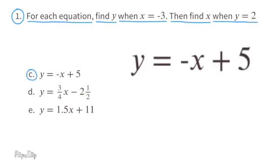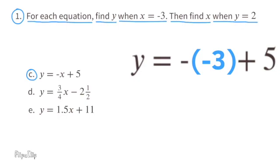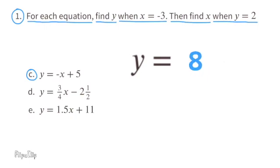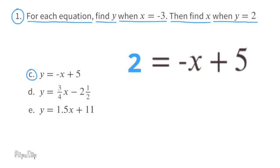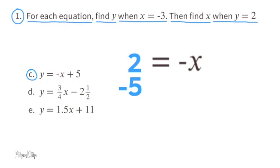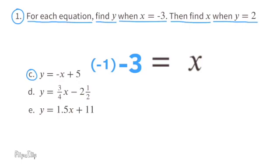Part c: y equals negative x plus 5. Substitute x with negative 3. The opposite of negative 3 is positive 3. 3 plus 5 equals 8, so y equals 8 when x equals negative 3. Now substitute y with 2: 2 equals negative x plus 5. Subtract 5 from both sides: 2 minus 5 is negative 3, so negative 3 equals negative x. Multiply both sides by negative 1: x equals 3 when y equals 2.